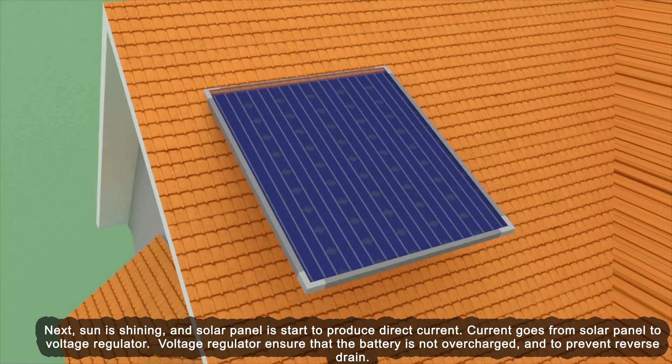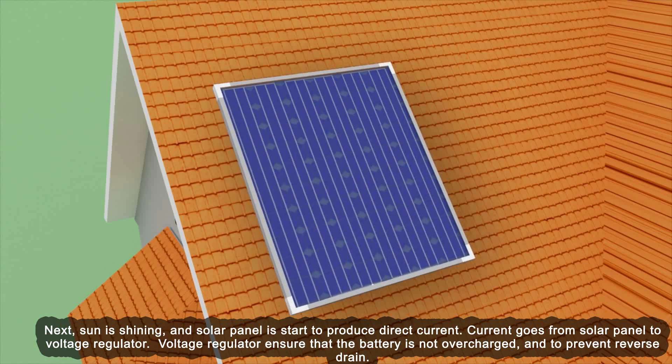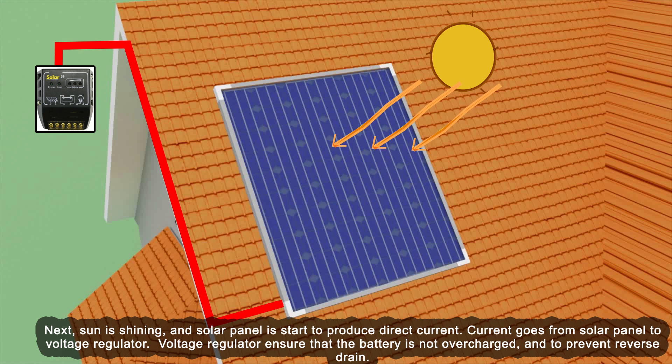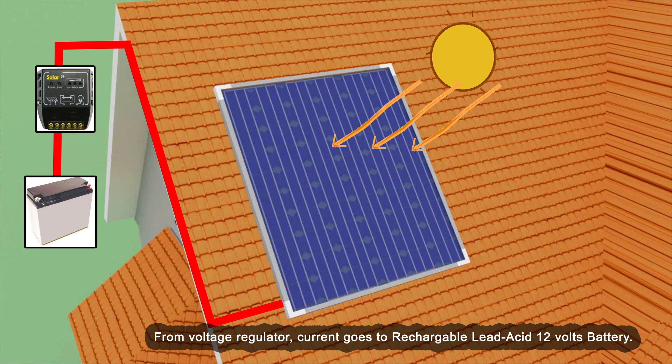Next, the sun is shining and the solar panel starts to produce direct current. Current goes from the solar panel to a voltage regulator. The voltage regulator ensures that the battery is not overcharged and prevents reverse current. From the voltage regulator, current goes to a rechargeable lead acid 12 volt battery.